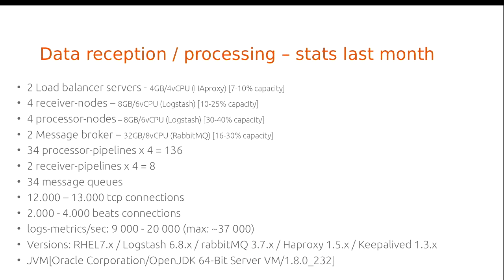Some stats — this is what we get in our system with that implementation. We have two load balancers, four receivers, four processors, and two RabbitMQ servers. We have around 34 processor pipelines and two receiver pipelines, and correspondingly 34 message queues in RabbitMQ — one for every processor pipeline. We have between 12,000 and 13,000 TCP connections to HAProxy and between 2,000 and 4,000 Beats connections, for a total of normally around 15,000–16,000 active connections at all times. All these servers are virtual and running in a VMware cluster. We're normally processing between 9,000 and 20,000 metrics or logs at all times. The top we've seen with this system is around 50,000–60,000 per second.